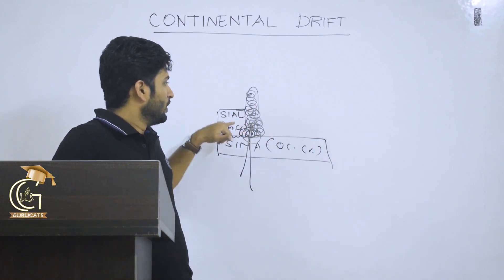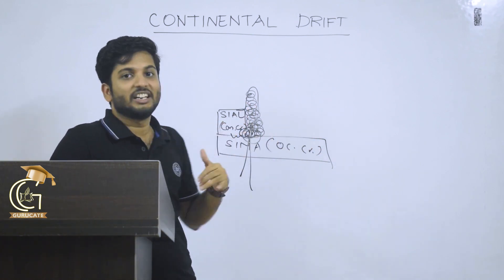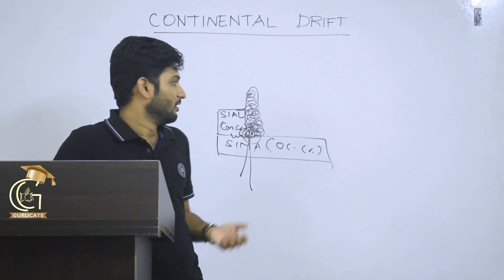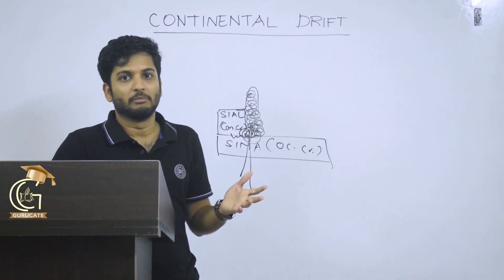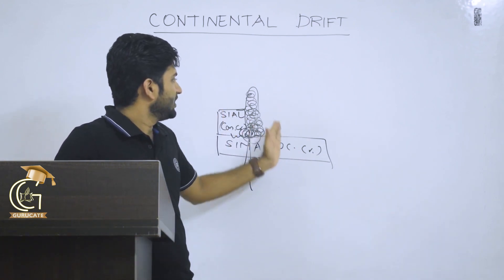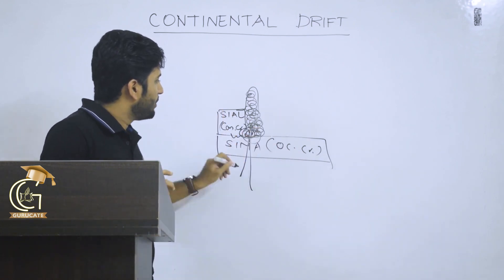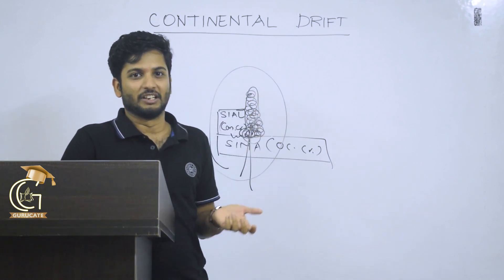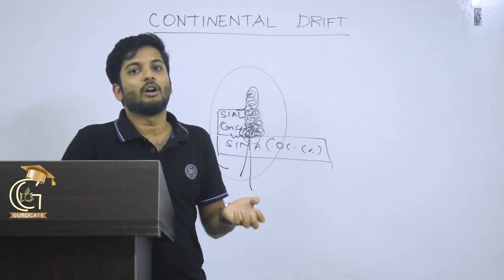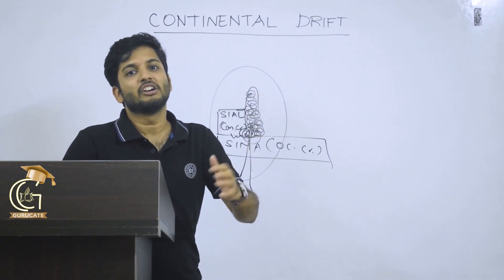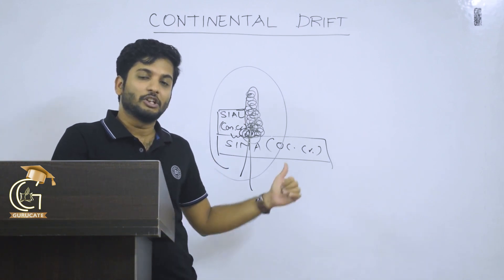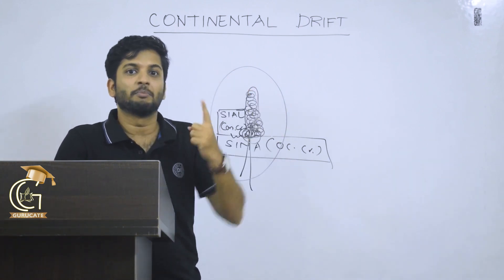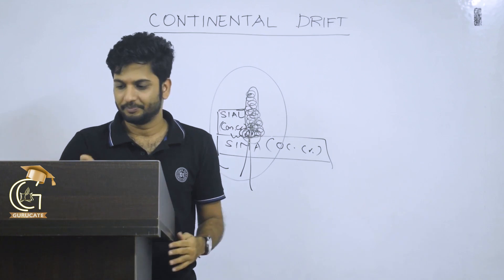The SIAL and SIMA theory has been rejected by geographers as a basic explanation. The true answer regarding how these features are formed is found in plate tectonic theory. We have finished with the conceptual part of continental drift theory.